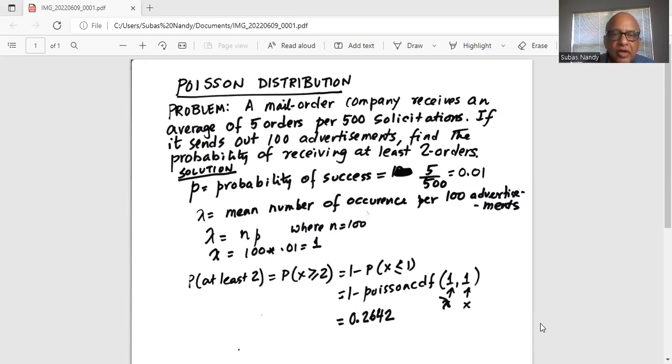Now, if it sends out 100 advertisements, we have to find out the mean number of occurrences per 100 advertisements. That is mean number of orders per 100 advertisements, which is known as lambda, is equal to n times p, where n is 100.